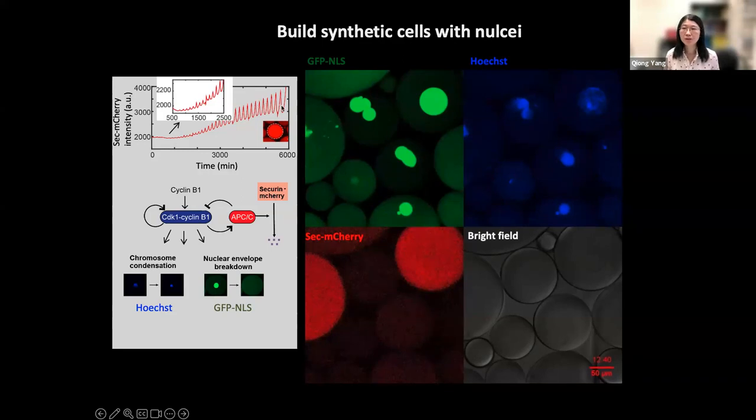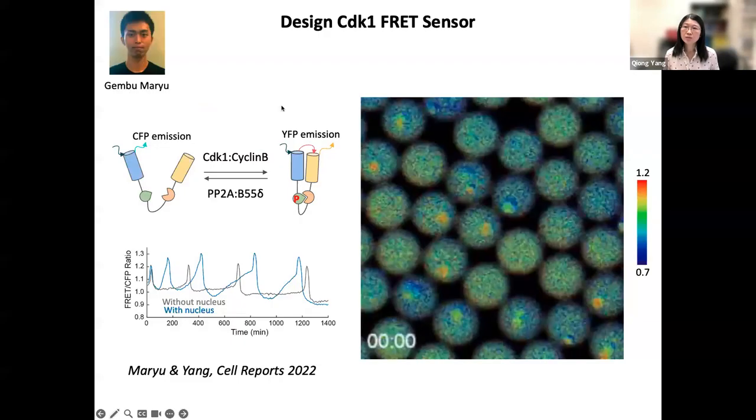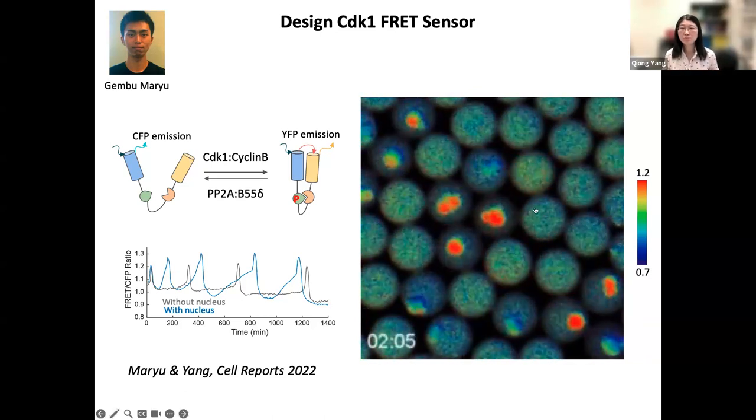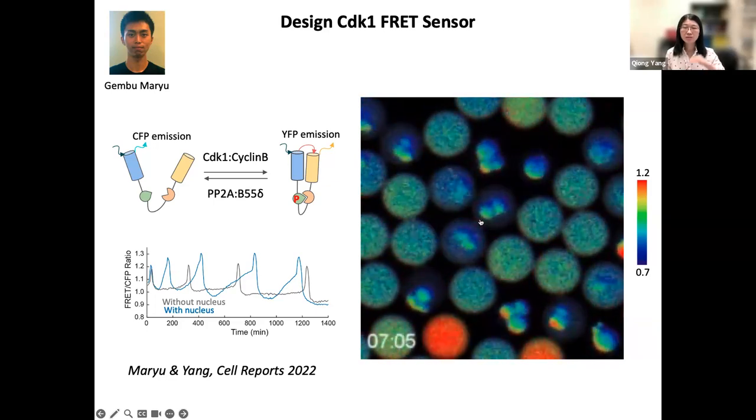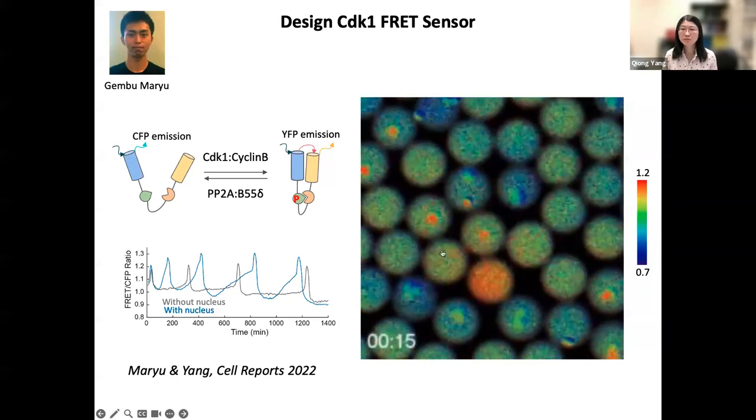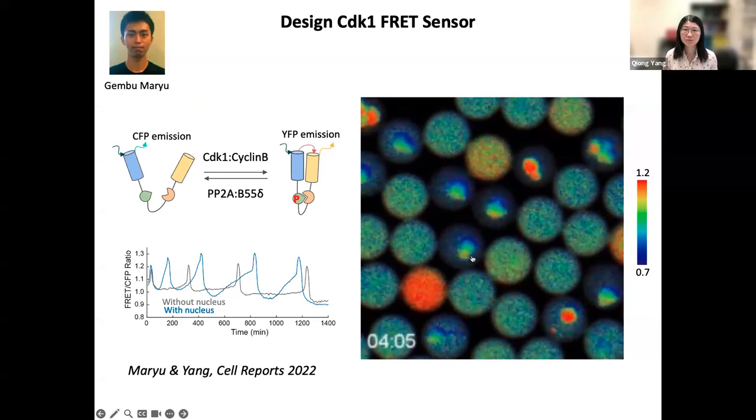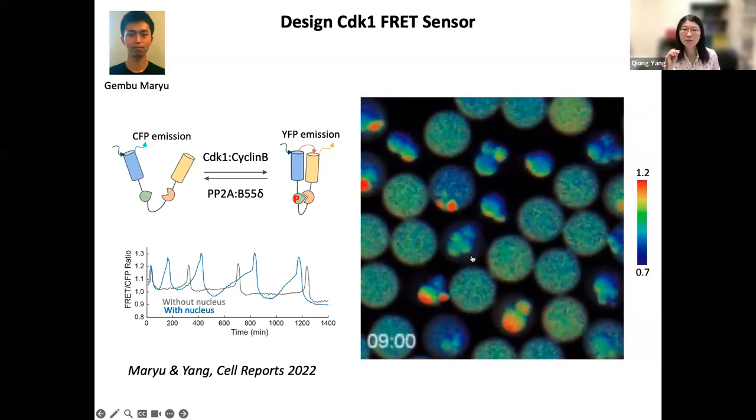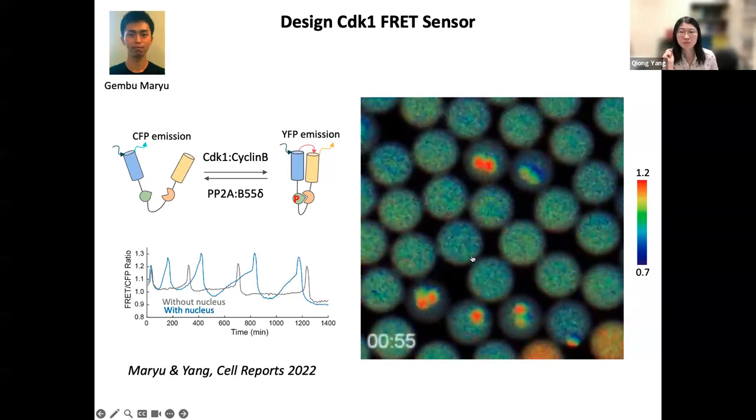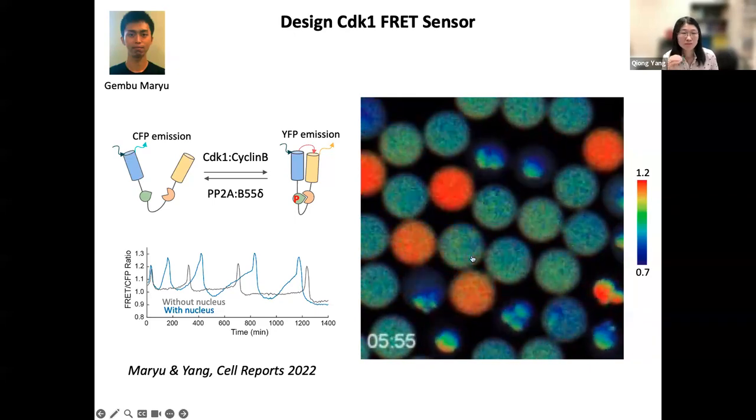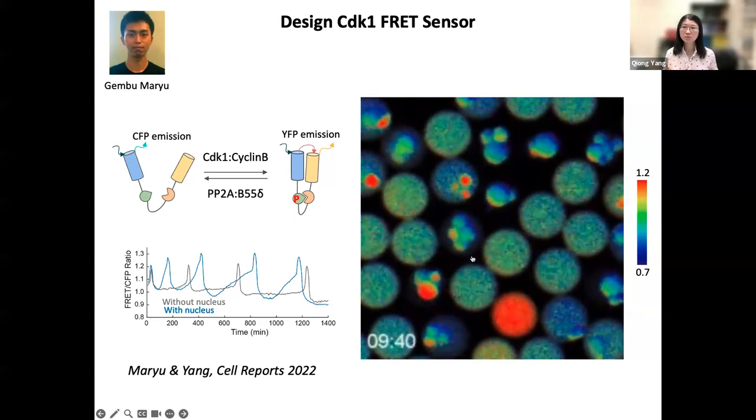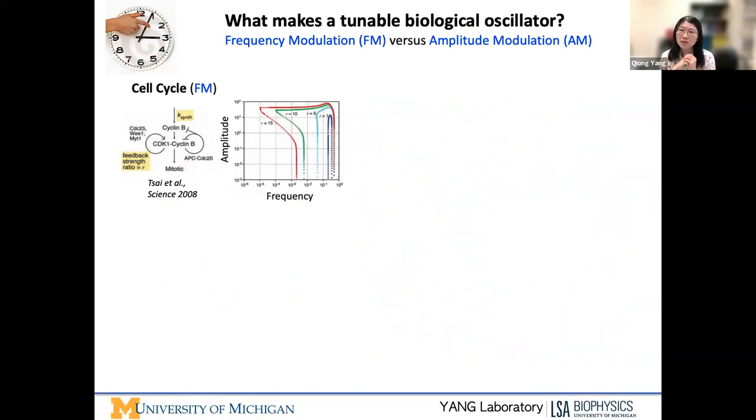To address that, Jembu, a postdoc fellow in our lab, designed a FRET kinase sensor that can directly detect the cyclin-dependent kinase activity. What I'm showing you on the right here, the video, shows that it's nicely detecting the CDK-1 activity oscillation in both non-nuclear droplets and droplets with nuclei. With this system, we could reliably measure period and amplitude simultaneously. That allows us to dissect a lot of questions related to the CDK-1 network.